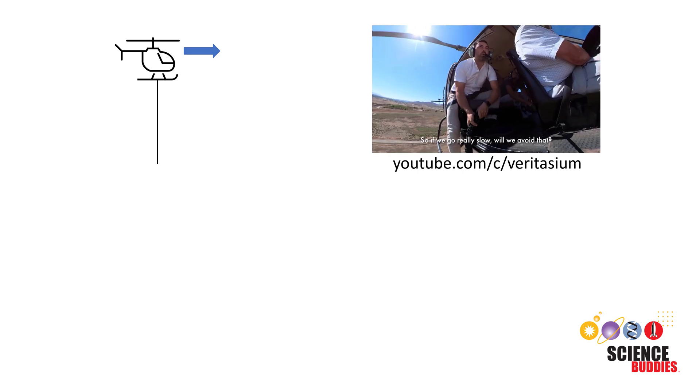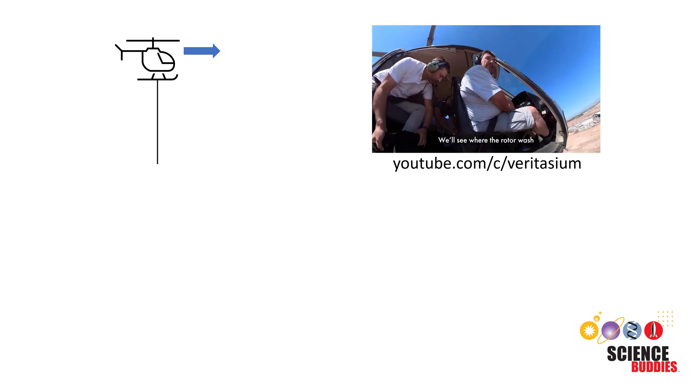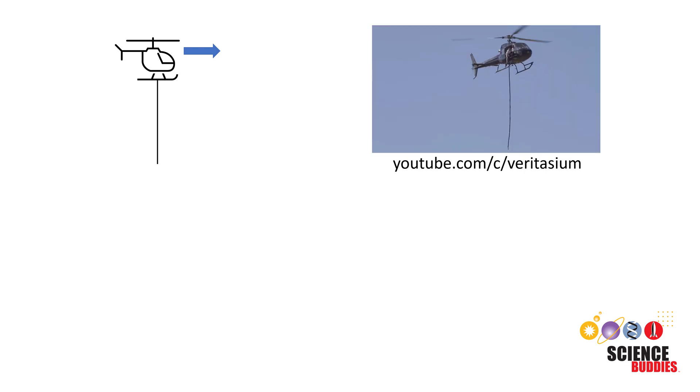What happens when you hang a rope from a helicopter that's flying forward at a constant velocity? This is an interesting physics question tested with a real helicopter in a recent video by Veritasium.